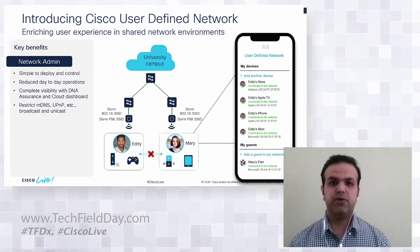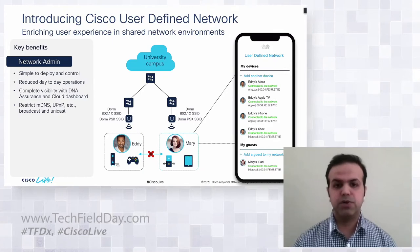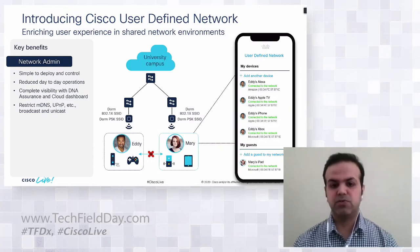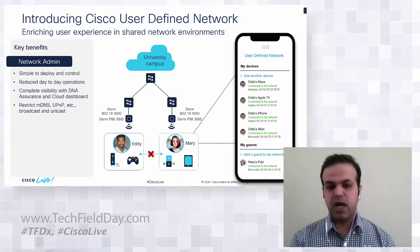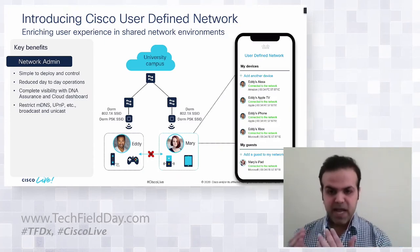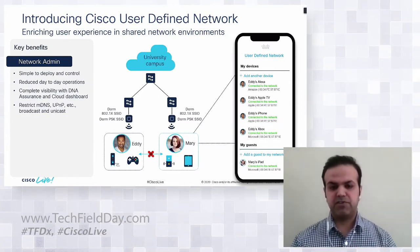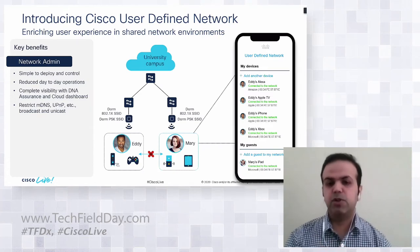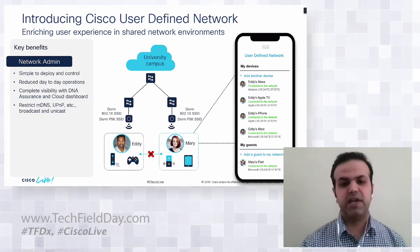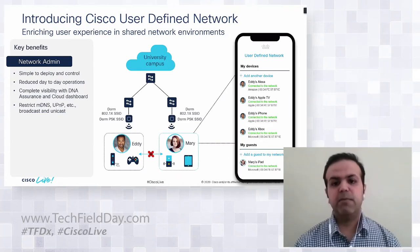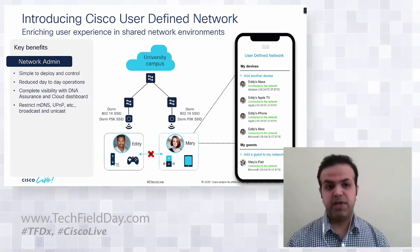This is where we are introducing the user-defined network solution. Once the solution is enabled, Eddie will be in his own private network segment and Mary will be in her own private network segment. They will not see each other's devices — they will only see devices belonging to their own private network segment, even though they are connecting to the same dorm SSID.